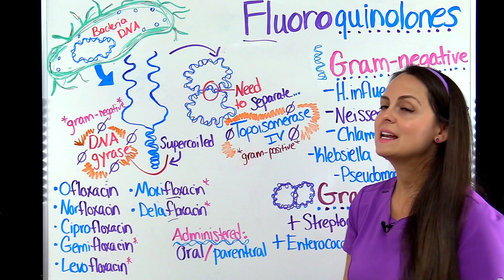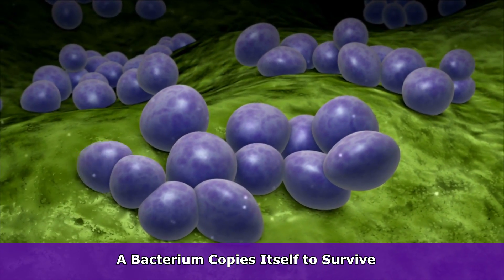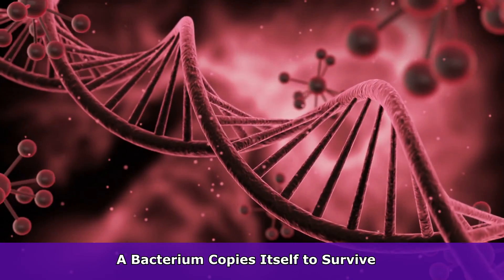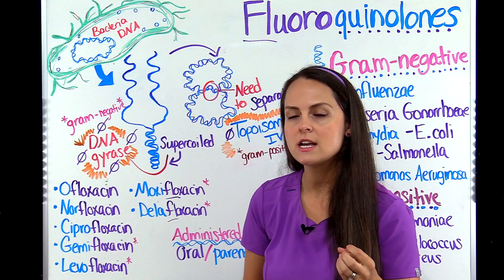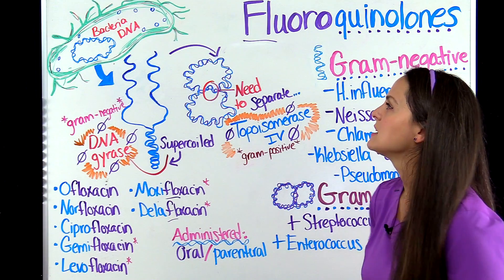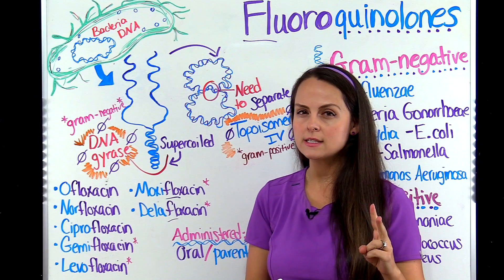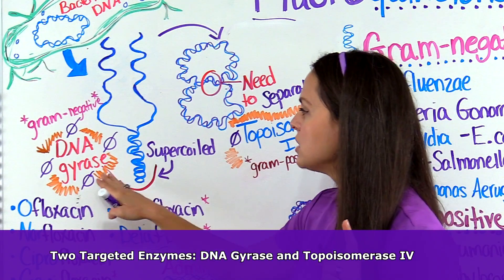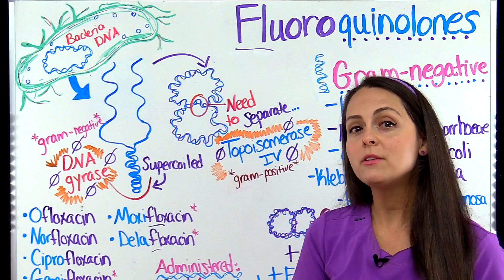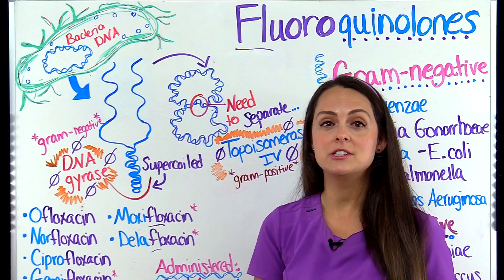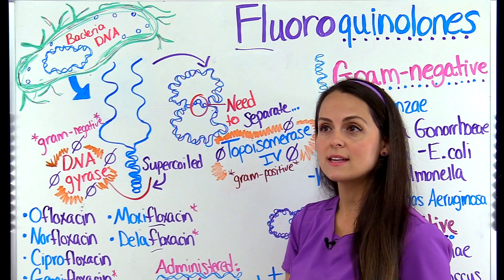How they do this is they inhibit the bacteria's DNA replication process. Bacteria must make copies of itself to continue surviving, and it does this by making copies of its DNA. Remember, DNA is like the instruction manual for a living organism — it tells that organism how to function, reproduce, and survive. There are many enzymes that play a role in this replication process, and fluoroquinolones target two particular enzymes: DNA gyrase and topoisomerase IV.